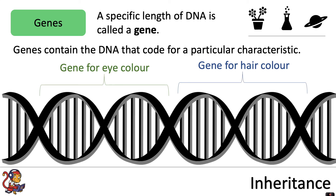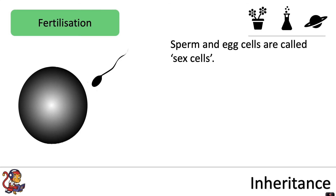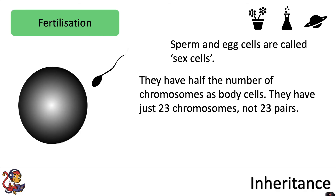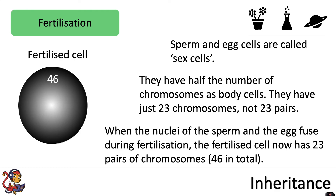So let's look at how you inherit these genes from your mother and father. After sexual intercourse the sperm will race to meet an egg. Sperm and egg cells are called sex cells, and they have half the number of chromosomes as body cells — just 23 chromosomes, not 23 pairs. If the sperm manages to penetrate the egg, the sperm is carrying 23 chromosomes and there are 23 chromosomes in the egg, so now in the fertilised cell there are 46 chromosomes altogether.